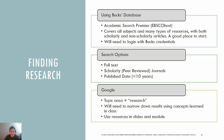For your research assignment, you will need to locate credible information. One way is to utilize the Bucks library database — make sure to click full text and you can also click peer-reviewed. Academic Search Premier or EBSCOhost covers all subjects and many types of resources with both scholarly and non-scholarly articles. If you cannot find what you need via the Bucks library, you will need to use Google. One way to search for research is by typing your topic area and then the word 'research' in the search bar.